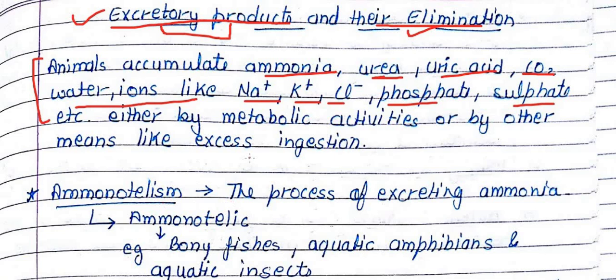These excretory products are made by metabolic activity, by foods, and by chemicals in the body. For example, chemicals made in the stomach like HCl, bile juice, etc. Other chemicals are also produced by various metabolic processes.